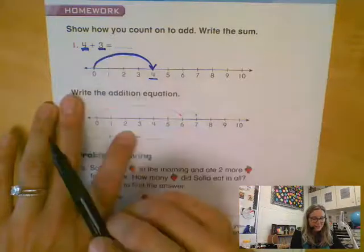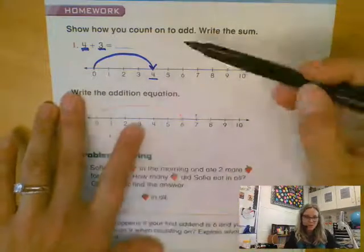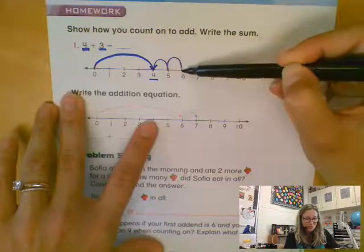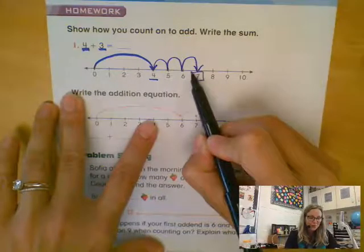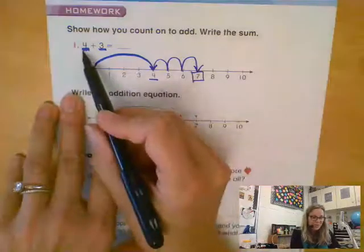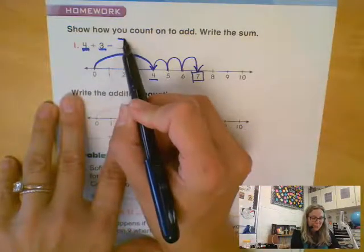Three is our next number. So those will be our ribbit froggy hops. So we'll say ribbit one, ribbit two, ribbit three, and we stop at number seven. So our answer four plus three more equals seven.